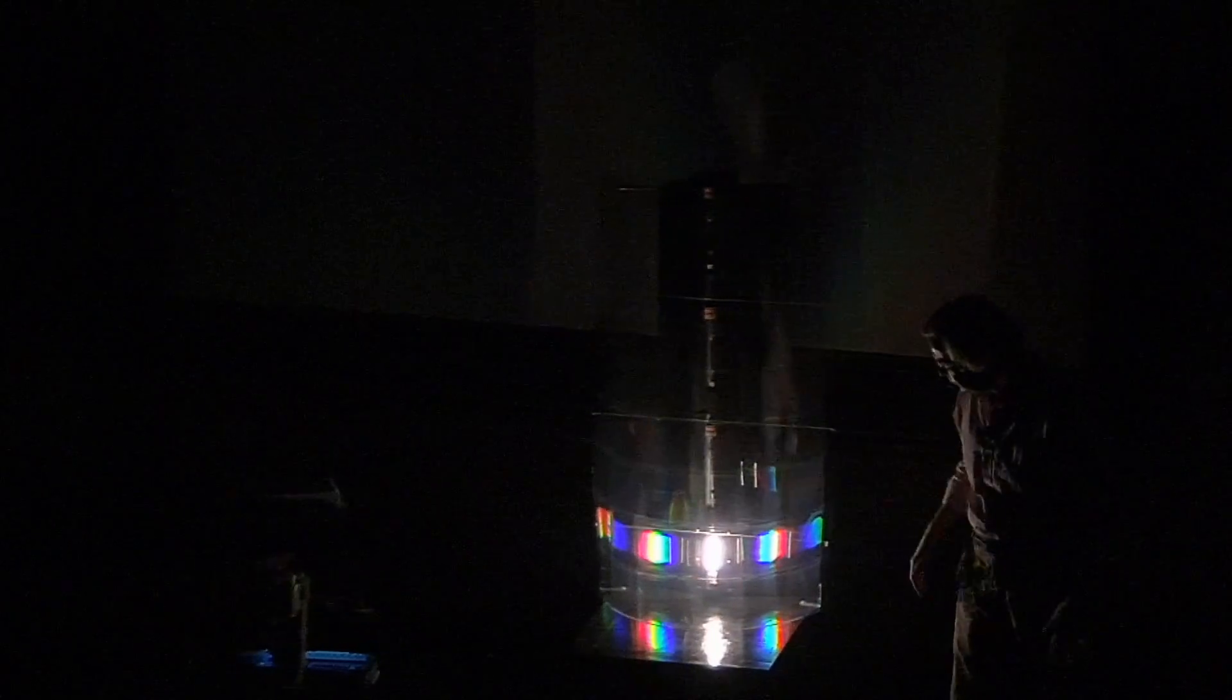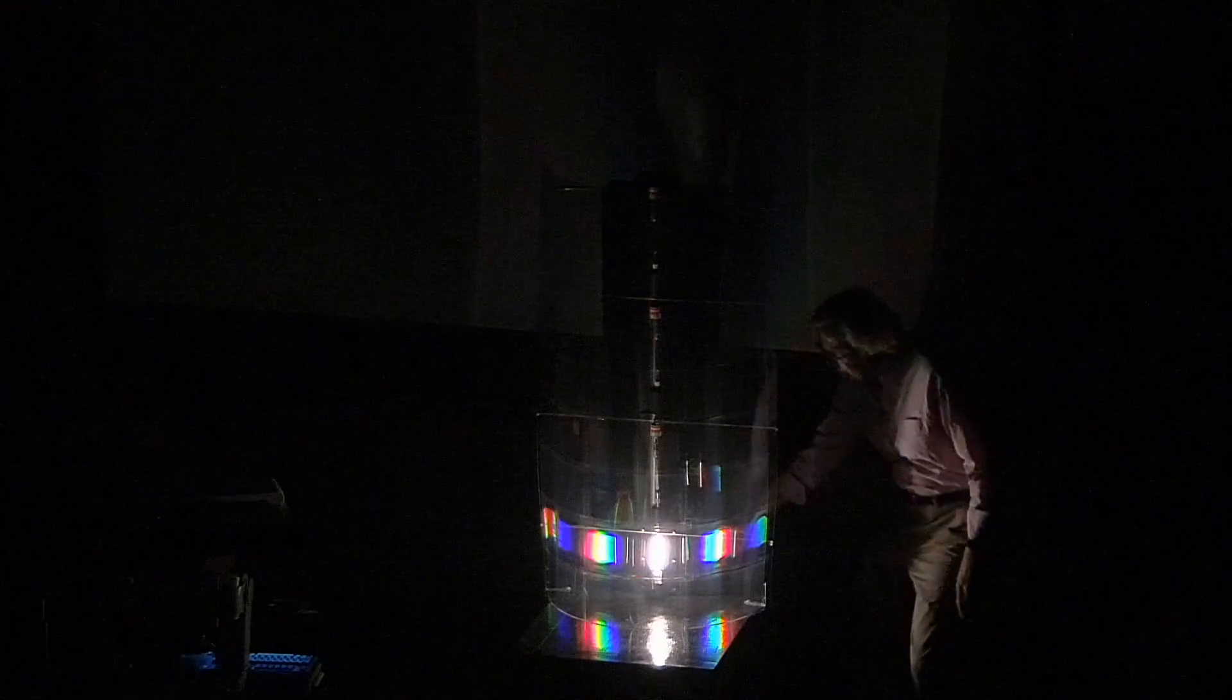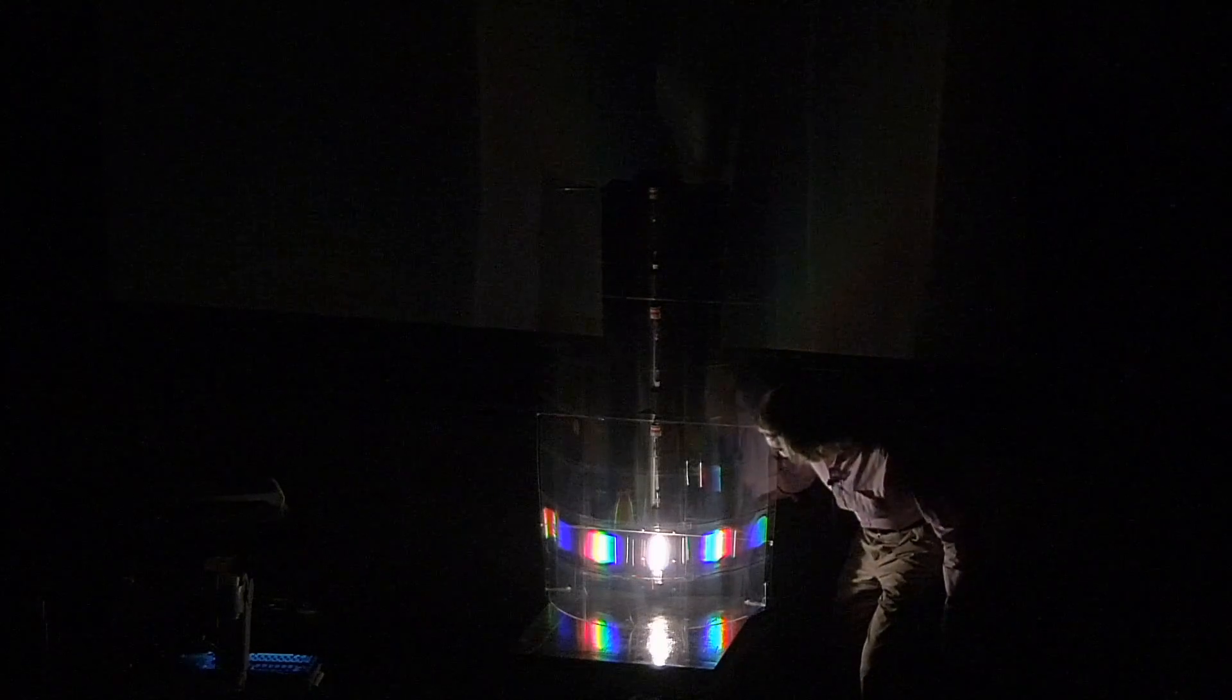But what is different is this thing in front. This thing in front is acting like a prism. It's dividing that white light into the different colors. Okay, but let me now switch that one off, and I'm going to switch that one on, and this is mercury.